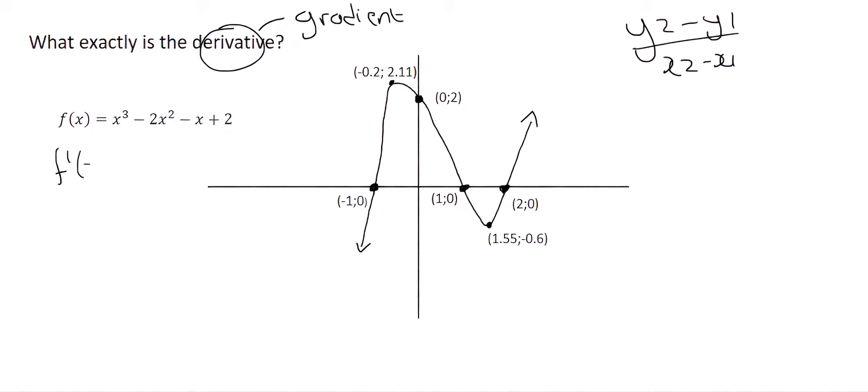Well we know how to do that because this is a simple one to do. So we just multiply the 3 into the front and that's just going to give us 3x squared. Then we multiply this 2 into the front, so that becomes 4x. And then the 2, you minus 1 from that, becomes a 1. And then this x, when you take the derivative, you just end up with minus 1. And then the 2 falls away.